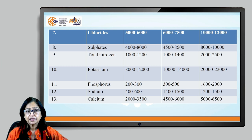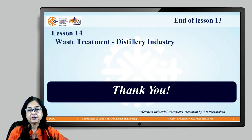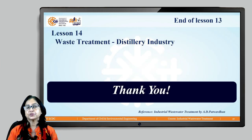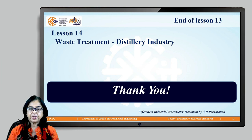The inorganic solids in the spent wash contain huge quantities of sulphate, nitrogen, potassium, and phosphorus, along with sodium and calcium. These characteristics explain why spent wash is known as one of the worst effluents, almost impossible to treat. In the next lecture, we will discuss treatment and waste management. This concludes lesson number 13 — thanks everyone.